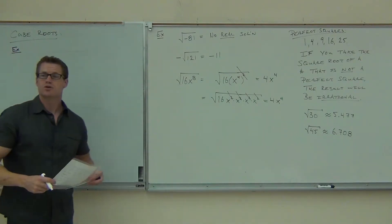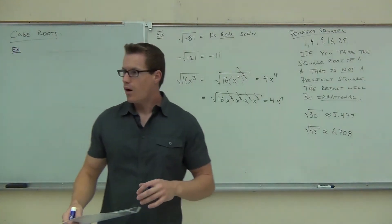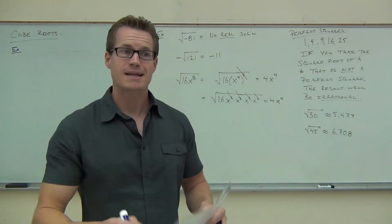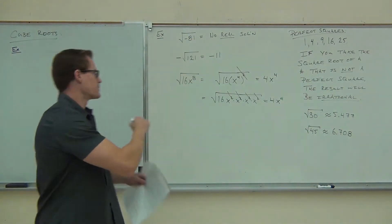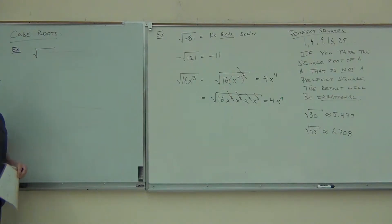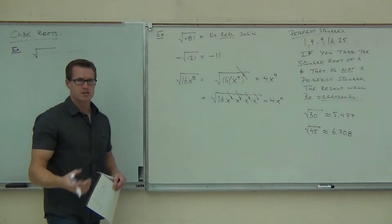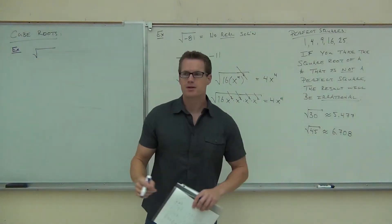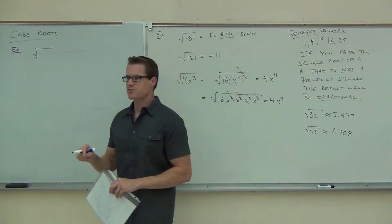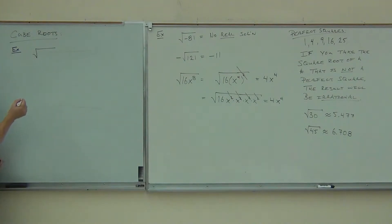Let me tell you what a cube root even looks like. All your roots are going to have a radical — that shape like this. Every root you ever see is going to have that. However, there's a little space for a number right here in the index portion of our root, where a number should go.